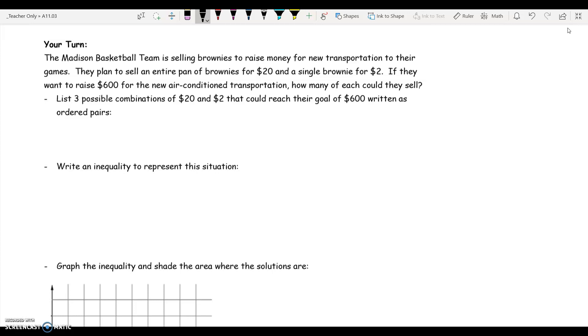Okay, so I'm going to jump right into writing the inequality. For this one, I'm going to let P, variable P, represent the number of pans of brownies, and I'm going to let B represent the number of single brownies. Now in this problem, I notice that pans of brownies are selling for $20, and single brownies are selling for $2, and we want to raise $600, but what goes unsaid here is that we want to raise at least $600 to get that air-conditioned transportation. Okay, so at least is represented by the inequality greater than or equal.